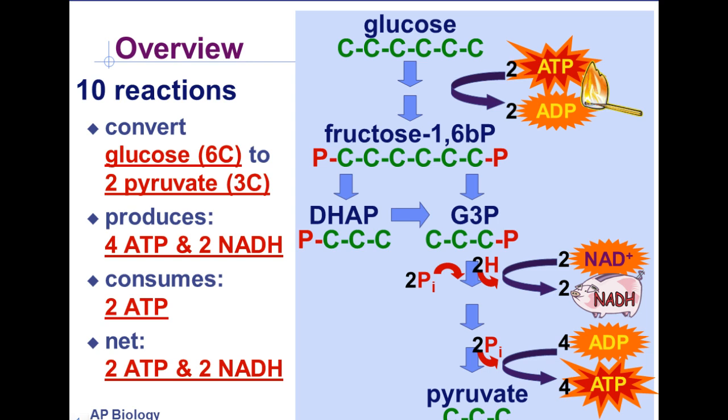The actual net production of glycolysis is two ATPs and two NADHs, which will be moved and used in the Krebs cycle. Four total ATPs are generated, but it costs two, so it only nets two ATPs out of glycolysis. Not that much — pretty inefficient energy production-wise.